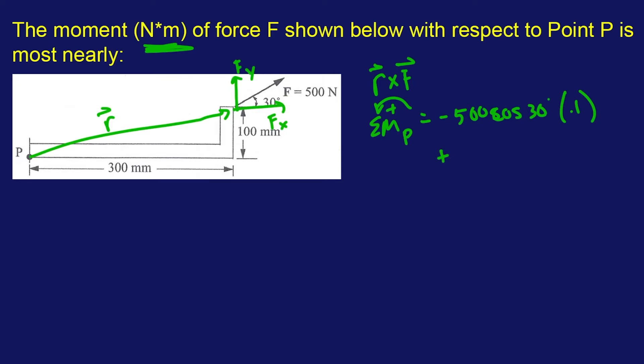And then we're going to add F Y because that's going to cause rotation in that direction, which is consistent with our sign, of course. F Y times 300, easy clap. So 500 sine 30, and then we're going to multiply this by 300 millimeters, which is 0.3 meters.